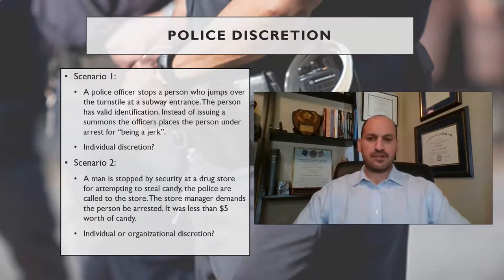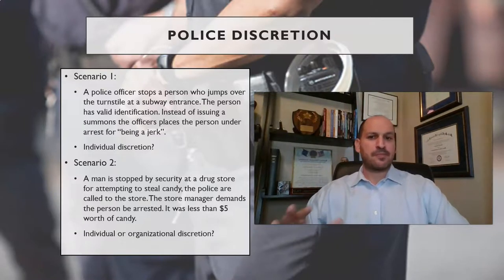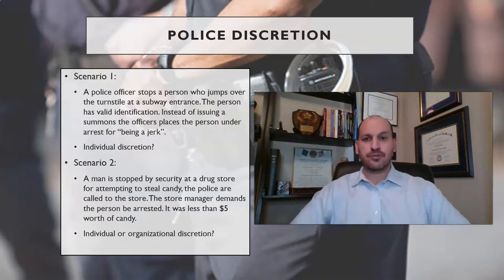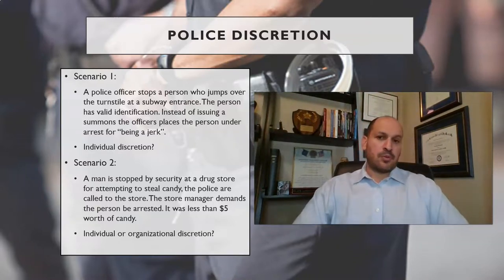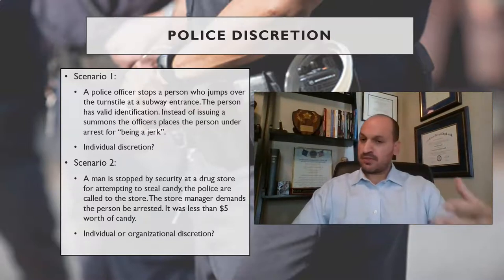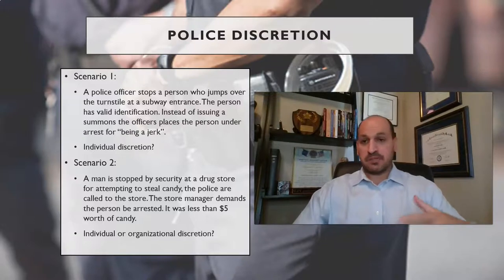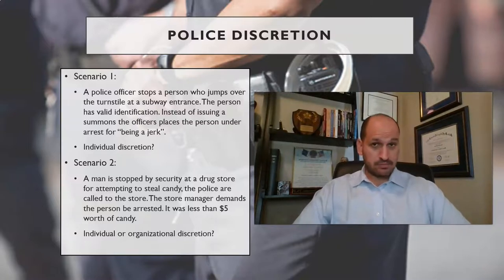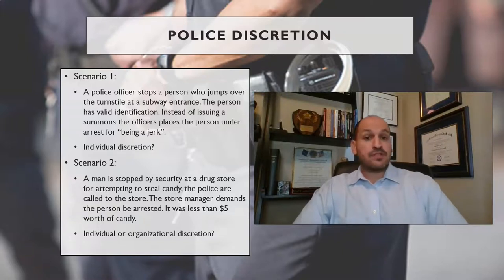Two brief scenarios illustrate discretion. First: a police officer stops a person who jumps a subway turnstile. The person has ID, but instead of issuing a summons, the officer places them under arrest because the person is mouthing off. That's discretion. Jumping a turnstile is theft of service — the officer could give a warning, a summons, or place the person under arrest. All are available under law and policy.